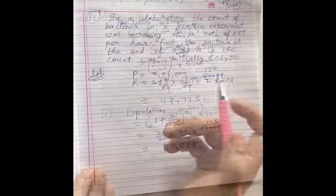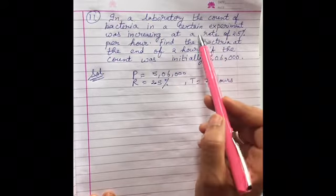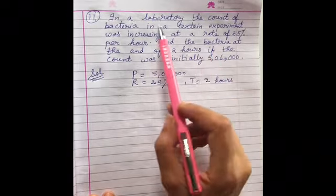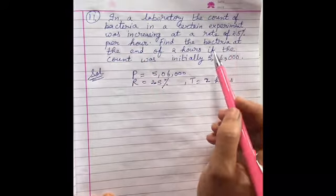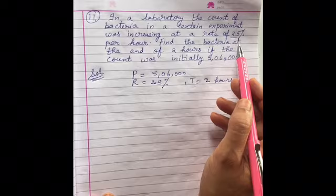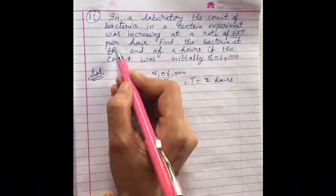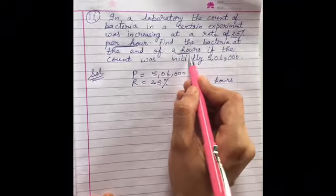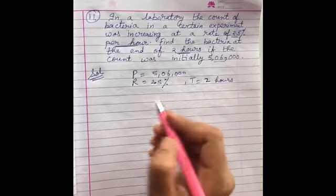Question number 11 is also the application of the same compound interest. In this we have to calculate the increase in the bacteria where the rate given is 2.5 percent per hour. Similarly, the time is also given in hours and the initial count is 506,000.